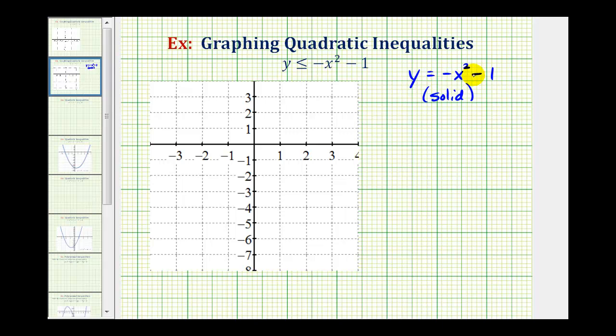Hopefully we recognize that the graph of this parabola is the graph of y equals x squared reflected over the x axis and shifted down one unit. But just in case we don't, we can always make a table of values to graph this parabola. So for example, if x is zero, y is equal to negative zero squared minus one, which is negative one.